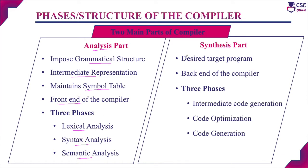In the synthesis part, the intermediate representation and the symbol table created by the analysis part are used as a reference, and the synthesis part produces the target program as the output. The synthesis part is also called the back end of the compiler. The next three phases — intermediate code generation, code optimization, and code generation — come under the synthesis part.